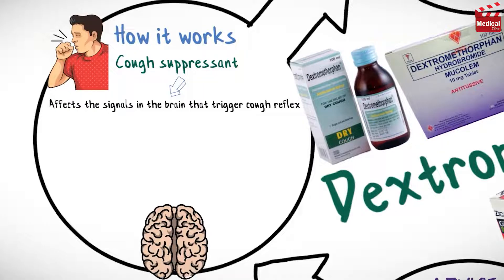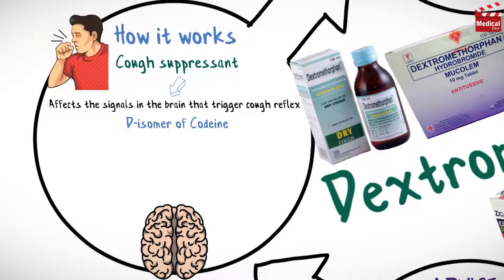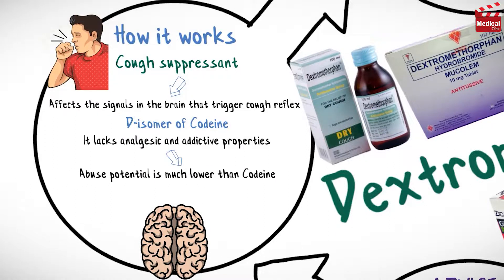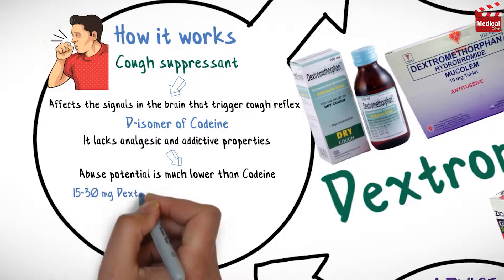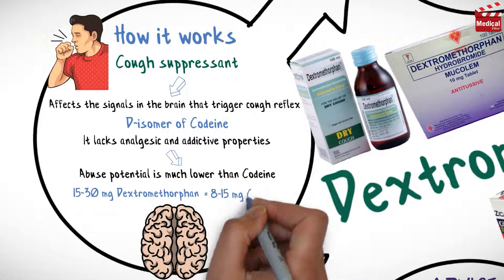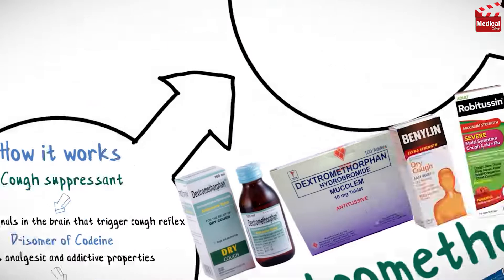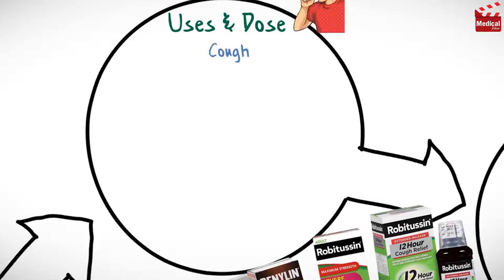Dextromethorphan is the D-isomer of codeine. It exerts its pharmacologic action in the same way as codeine; however, it lacks analgesic and addictive properties when used at recommended doses, so its abuse potential is much lower than codeine. About 15 to 30 milligrams of dextromethorphan is equal to 8 to 15 milligrams of codeine as an antitussive.